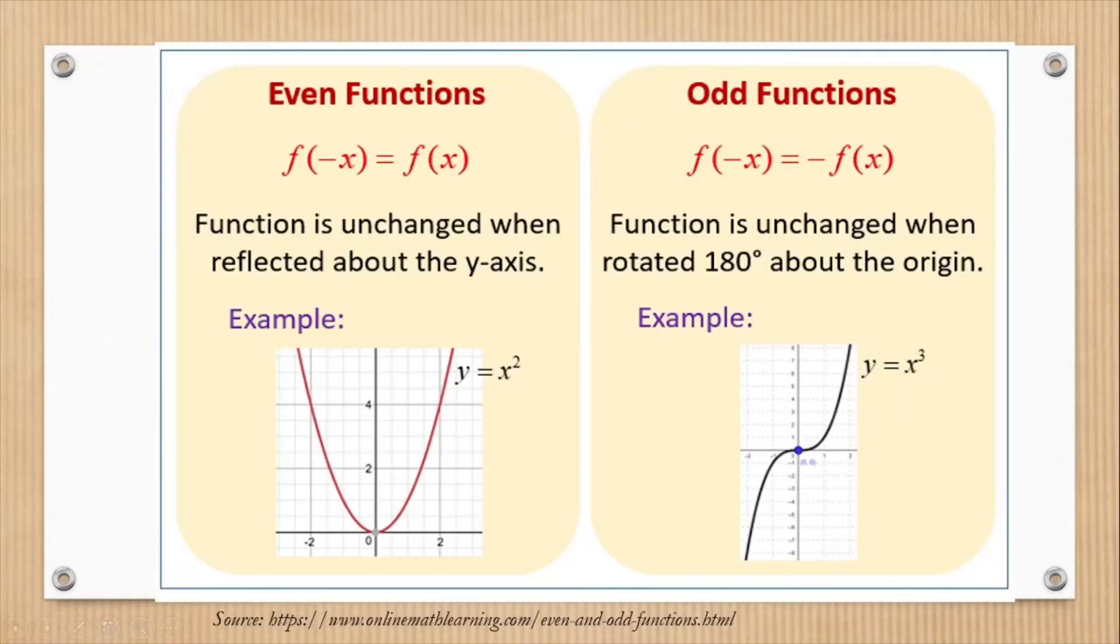Another method to evaluate or classify a function as odd or even is by visual inspection. If the graph of your function is symmetrical about the y-axis, that function is an even function. Like the example here, if you mirror it along the y-axis, the result is the same.